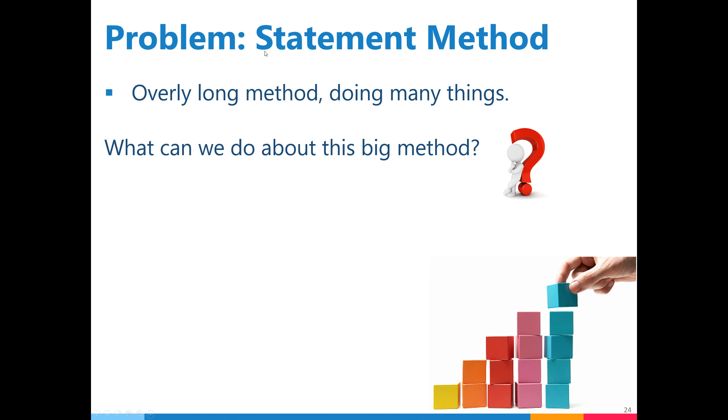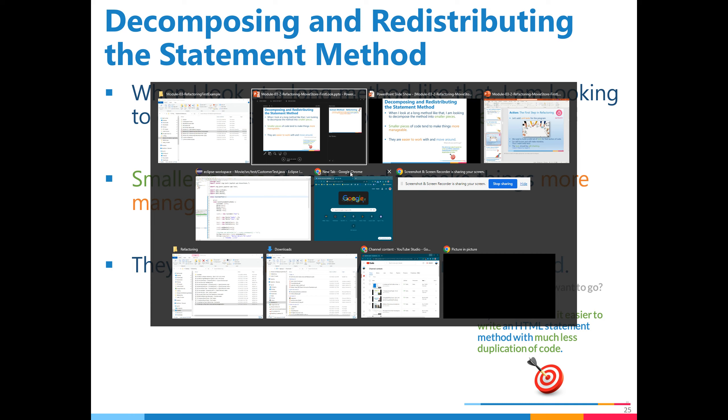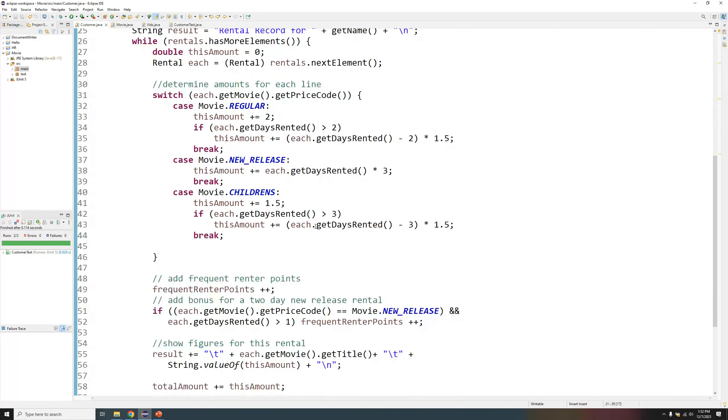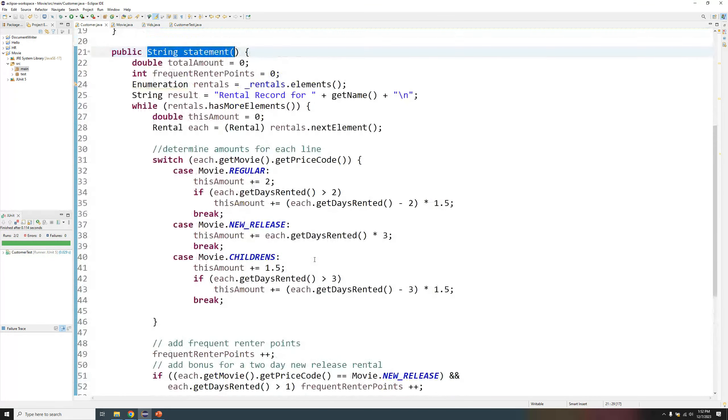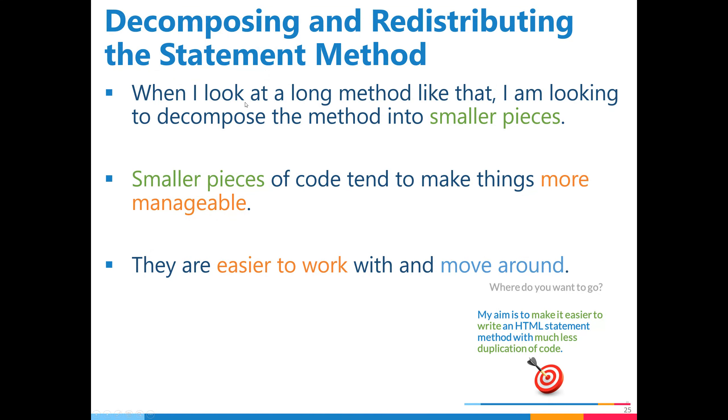So self-checking test, unit test we have added, right. Let's look at some of the stuff after this. We were talking about the statement method, overly long method doing many things. What can we do about this big method? So decomposing and redistributing the statement method, we want to slice this big huge method.